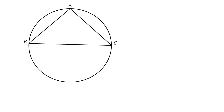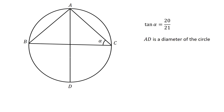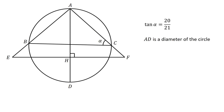Hi, welcome to my channel. In this video, we want to solve the following problem. Given a circle, let ABC be an inscribed triangle with angle BCA equals alpha and tangent alpha equals 20 over 21. Let D be a point on the circle such that AD is the diameter of the circle. Extend AB to E and extend AC to F such that EF is perpendicular to AD, and let H be the point where EF intersects AD. Given that AH equals 2HD, EH equals 21 units, and HF equals 20 units, find the length of AC. And now for the solution.